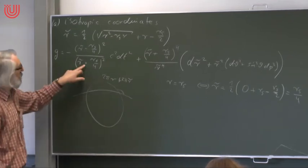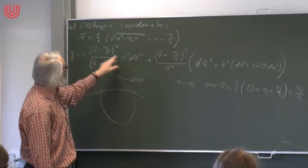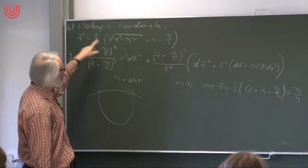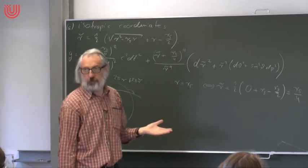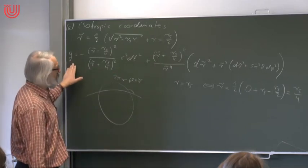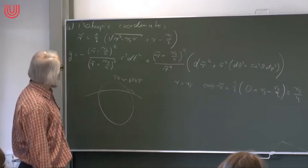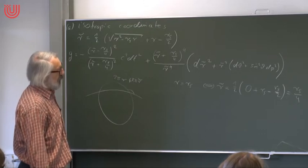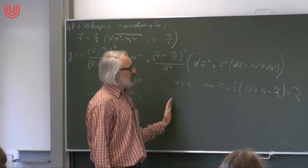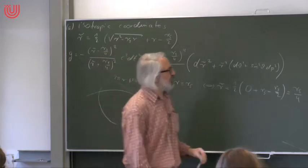If gtt becomes zero, the metric becomes degenerate. It's a diagonal metric, and if one diagonal element is zero the determinant is zero, so the inverse doesn't exist. The metric coefficients stay finite but the inverse doesn't exist — this is equally bad. So we have the same kind of coordinate singularity in isotropic coordinates; it just shifts from r = rs to r-tilde = rs/4, but it doesn't resolve the problem.